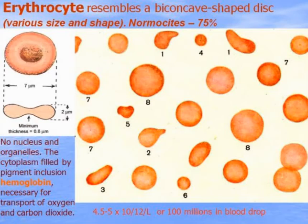This biconcave disc shape is typical for about 75% of erythrocytes, which are called normocytes. There are also some bigger cells called macrocytes, or smaller cells called microcytes. Erythrocytes contain no nucleus and no organelles, and the cytoplasm is filled by the pigment-inclusion hemoglobin, necessary for transport of oxygen and carbon dioxide.